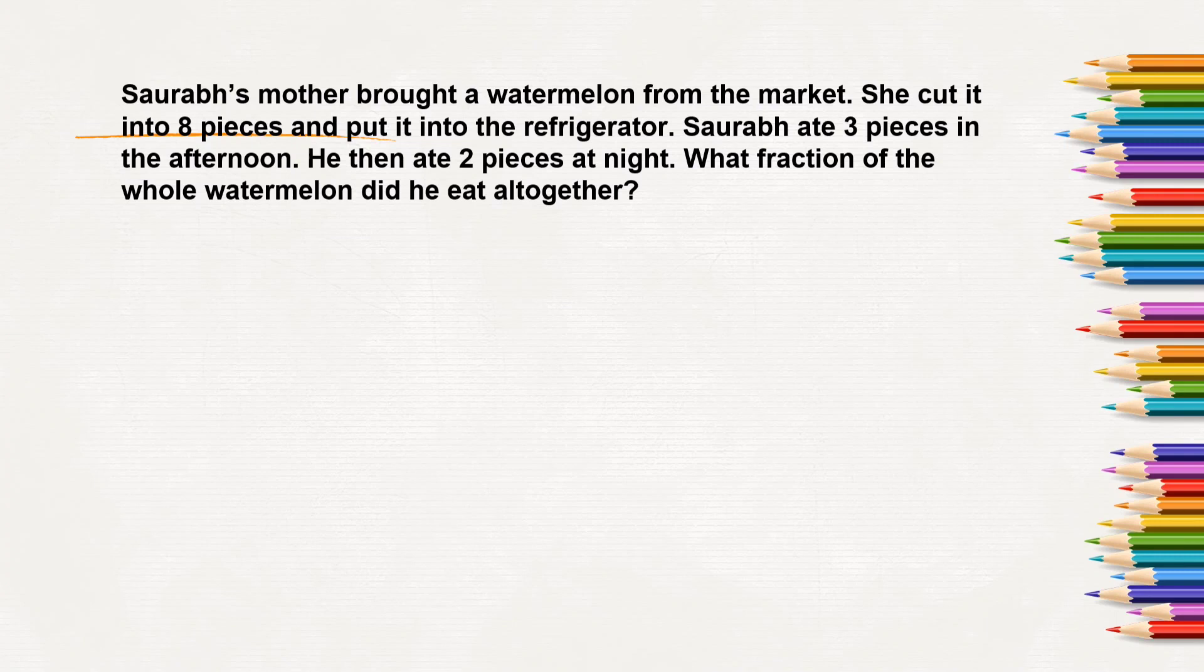Here, Saurab ate total 3 pieces in the afternoon, 3 pieces out of 8 pieces in the afternoon. And 2 pieces at night, 2 pieces out of 8 pieces at night. To find out what fraction of a whole watermelon he ate, we will have to add these two fractions.